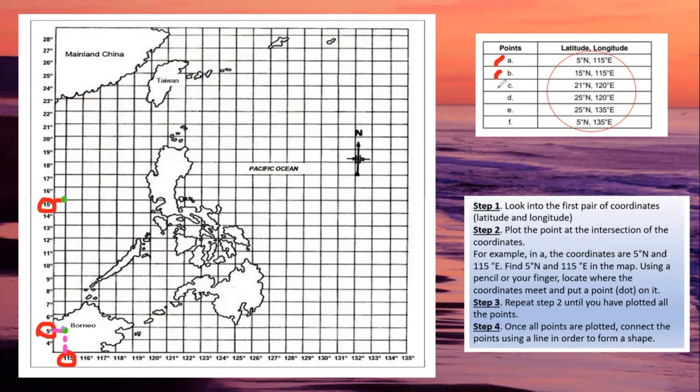So once done, you proceed to the next set of points. So you have 21 north and 120. So now you go to 21 and 120. So you'll find 21. So actually, from 21, just look down to find 120. So you see the pen moving. And when you find 120, then you stop.